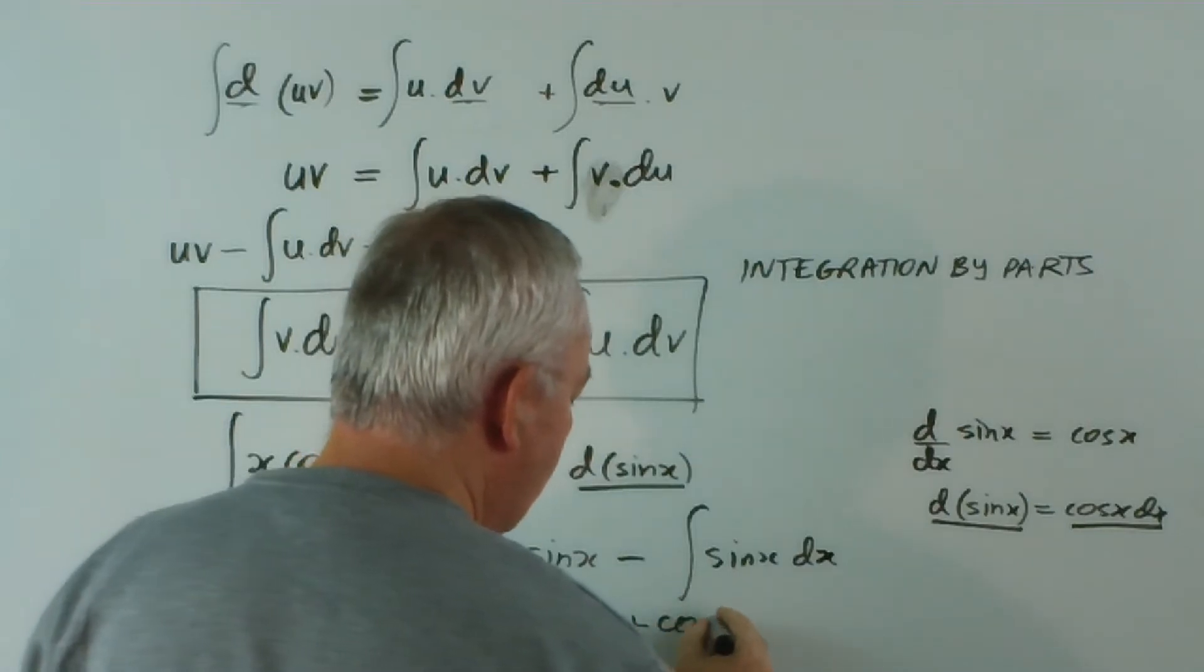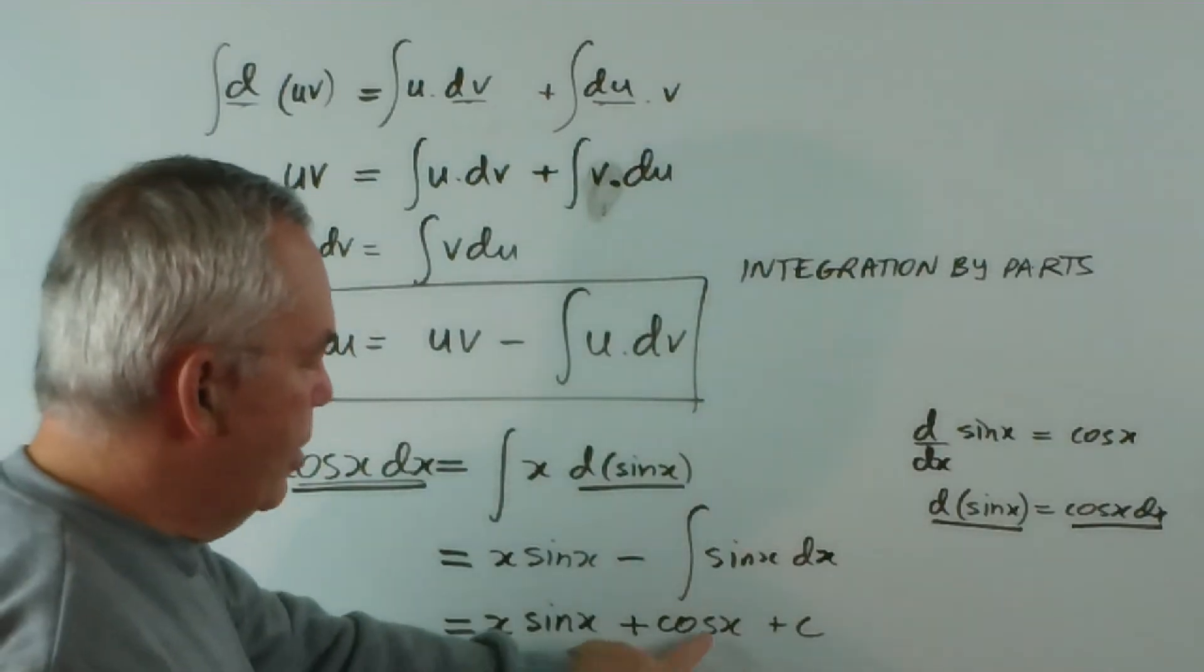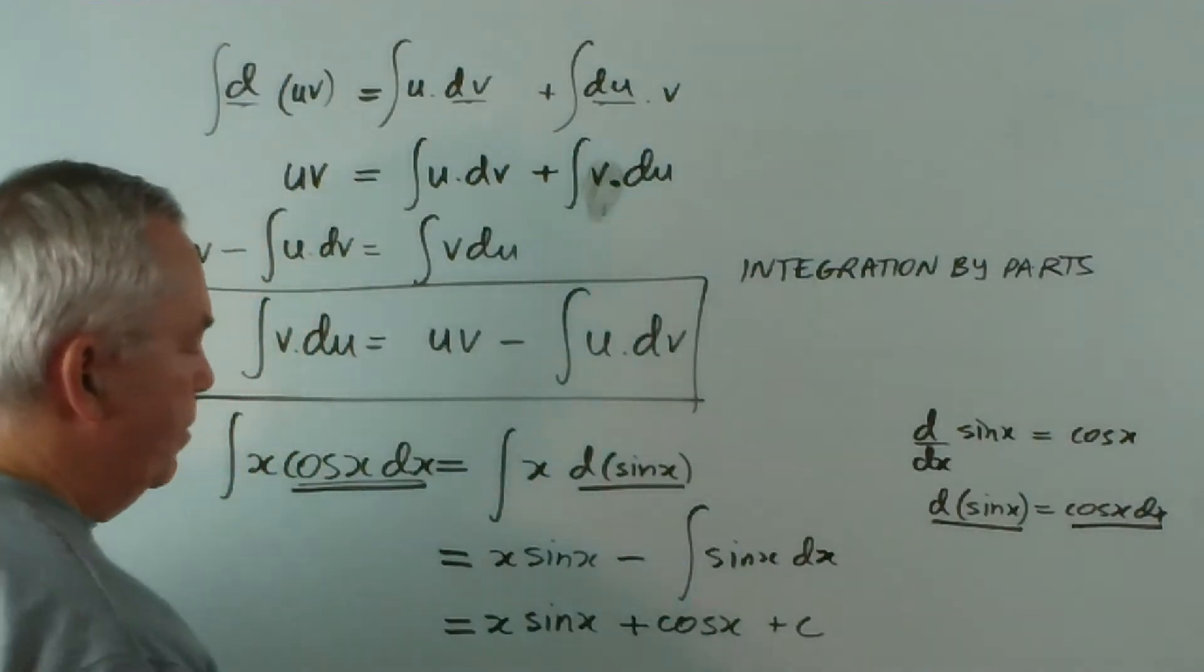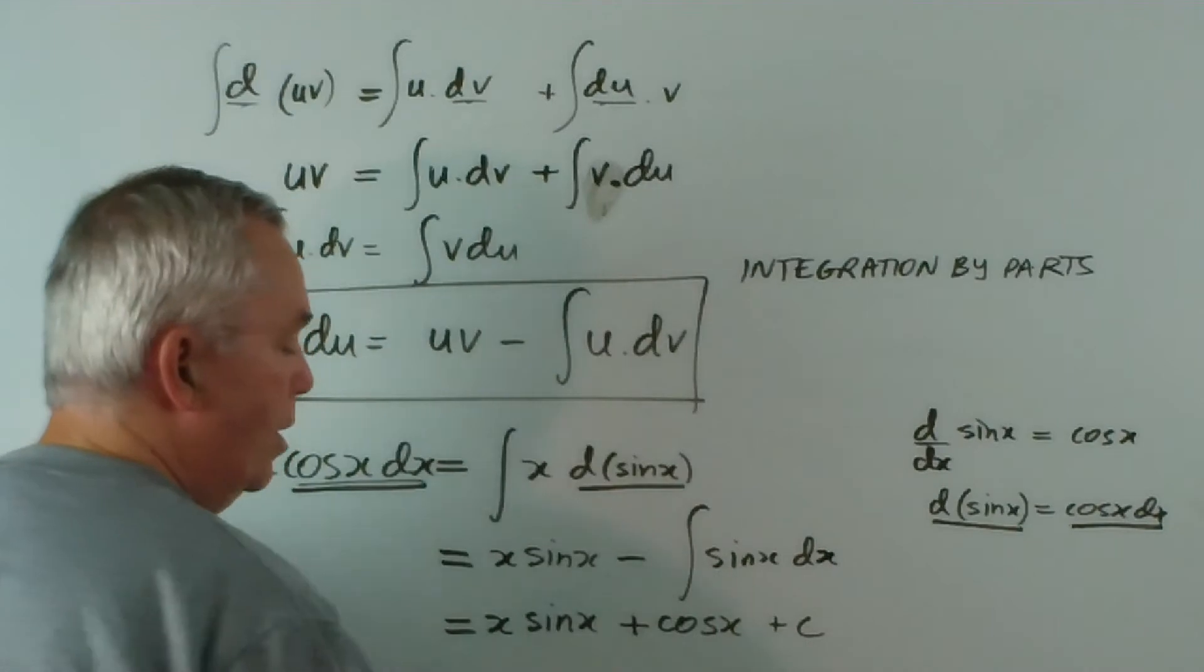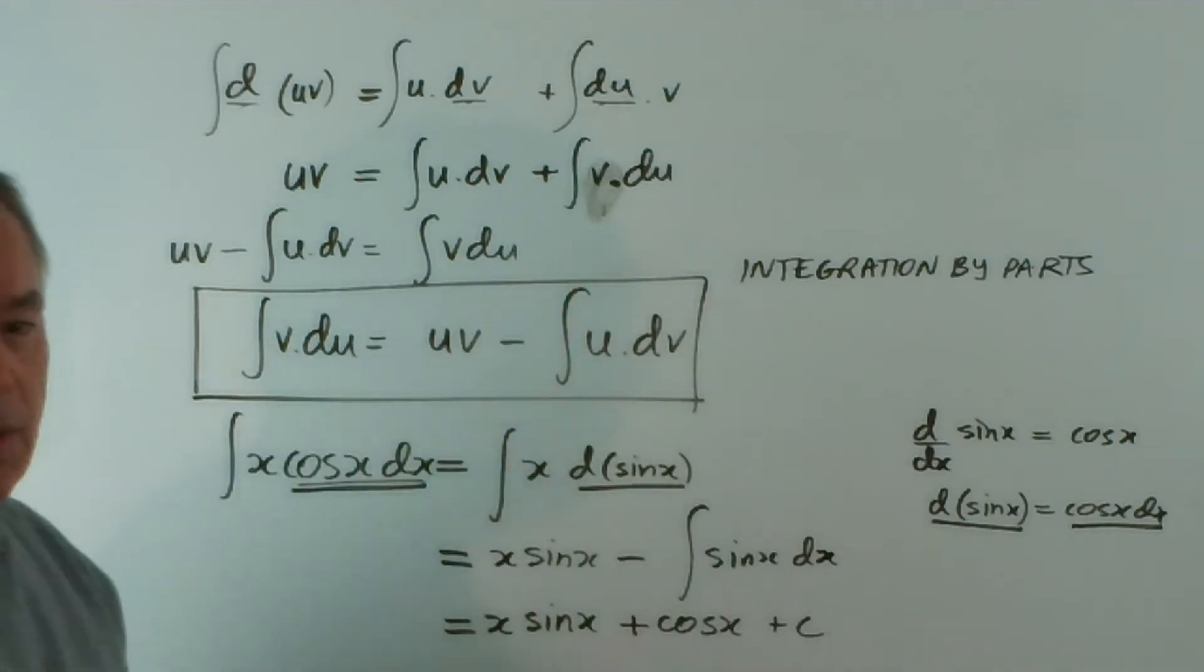And you know that the integral of sine x is negative cos x. So I'll just... Because the derivative of the cosine is negative sine. There you go. The derivative of cosine is negative sine. There it is. That is an integral performed using integration by parts. What a clever technique.